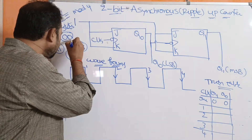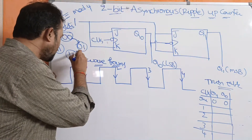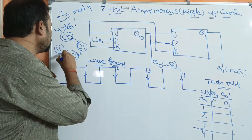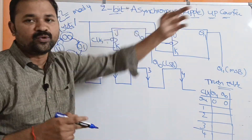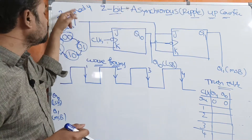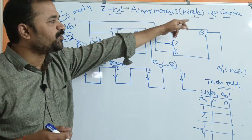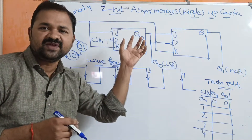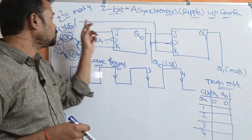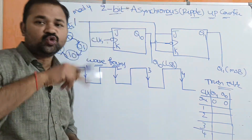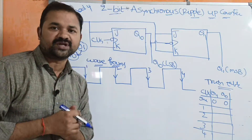This counter can also be called a mod-4, 2-bit asynchronous up counter because it produces 4 states total (2² = 4). From state 3, we go back to 0, which is why this is an up counter and also called a mod-4 counter.